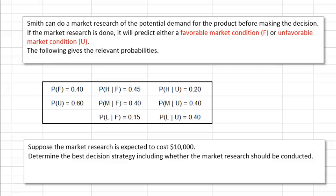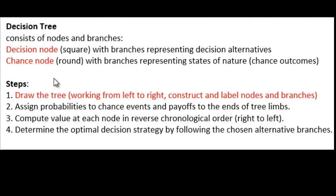This situation involves more than one decision, so it's best to use a decision tree. The steps in a decision tree analysis are as follows. First, draw the tree from left to right — it has two kinds of nodes: square nodes, which represent decision points, and round nodes, which represent chance event nodes. After drawing the tree, assign probabilities to chance events, that is, the branches coming from the round chance nodes, and assign payoffs to the ends of the tree limbs. Third, compute the value at each node, solving the tree from right to left. Then determine the optimal decision strategy.